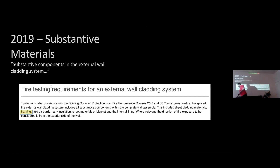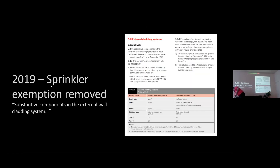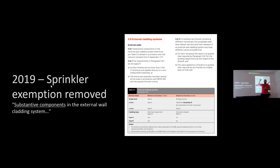2019 was actually a really important code clause for fires and combustible claddings — written really, really well. It had a couple of key things: it referred to 'substantive components,' which was a new concept — not just the cladding materials, not just the rigid air barriers. This was defined further on. It also said that now, even in sprinkler buildings, you can't just use whatever you want — there needs to be some level of surety on what they're going to do. No more sprinkler exemption; now looking at whole wall systems.